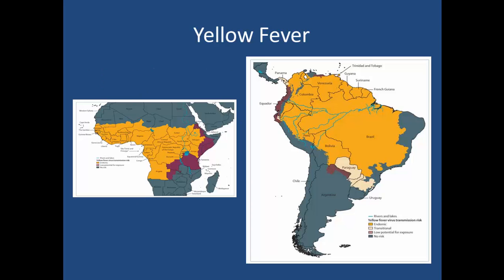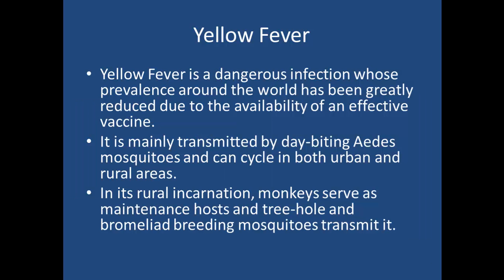The next disease we're going to discuss is yellow fever. Yellow fever is also a viral disease related to dengue fever — they're in the same family. It can be seen in Sub-Saharan Africa and many places as well as South America. Yellow fever's prevalence around the world has been greatly reduced due to the availability of a vaccine, which is very effective. Many may have had this vaccine; they used to say it was valid for 10 years, but new studies show the vaccine is effective for your entire life, so the WHO changed the recommendations. However, a lot of countries are slow to move on this, so if you've had the vaccine more than 10 years ago you might still need a booster.